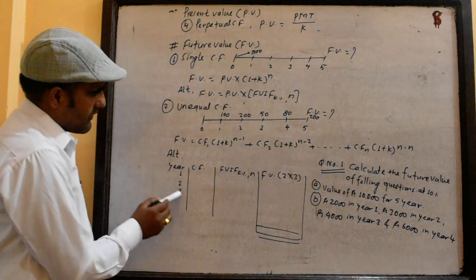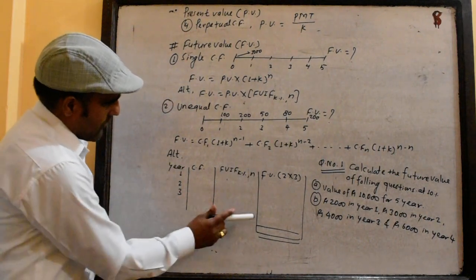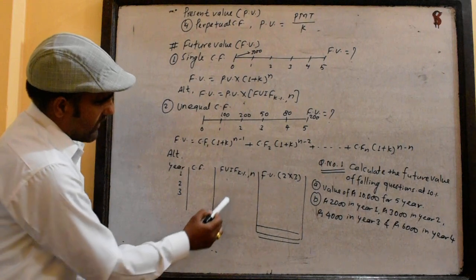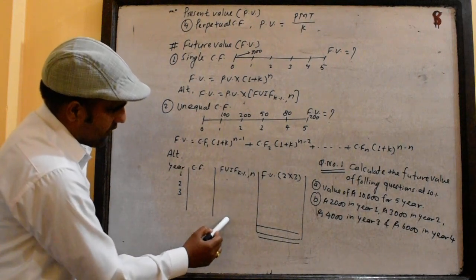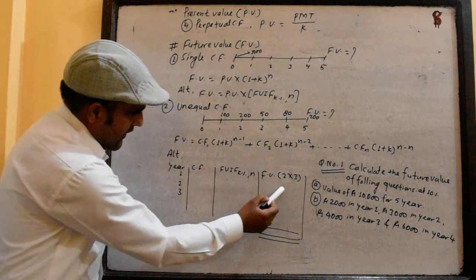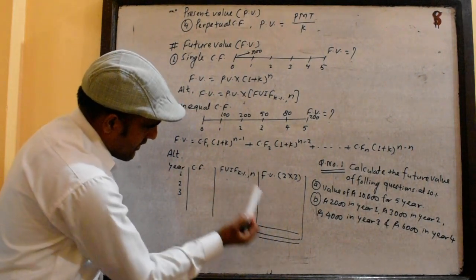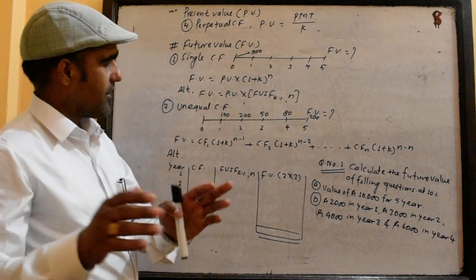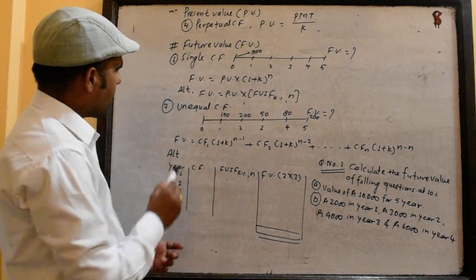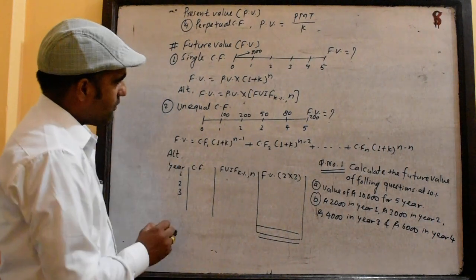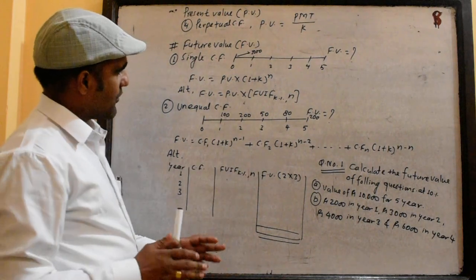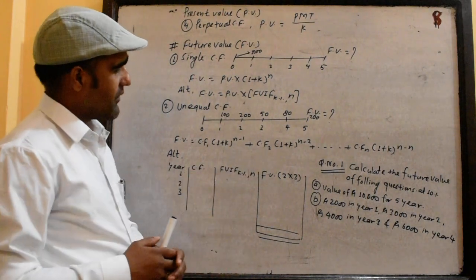Alternatively, this is the table FVIF. If you have a cash flow or FVIF, this is the last one. So, this is the total future value. So, this is the unequal cash flow. This is the formula FVIF.